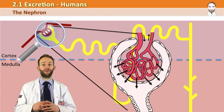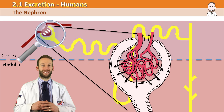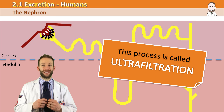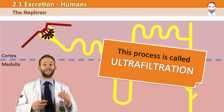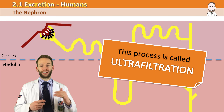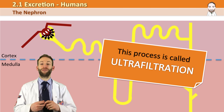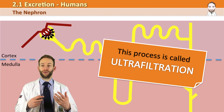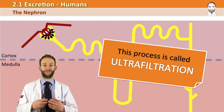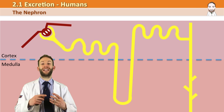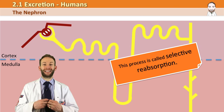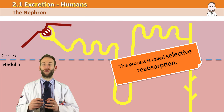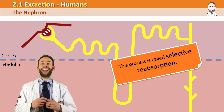That blood then continues out via what we call the efferent arteriole and carries on its way. This process is called ultrafiltration. The problem is there's lots of good stuff that's just been filtered out of the blood. The filtrate that has come out will be excreted as waste if it carries on down the nephron — but you do not want to get rid of glucose or amino acids. So the next part of the nephron is dedicated to taking the good bits back into the blood, so that all that's left at the end are the waste products.